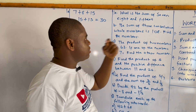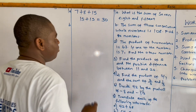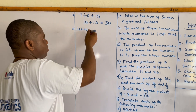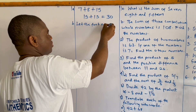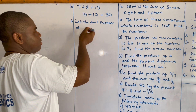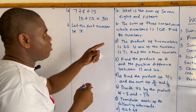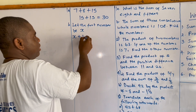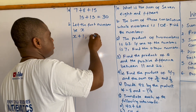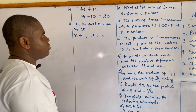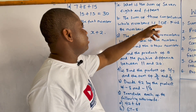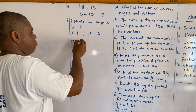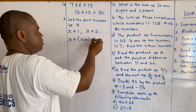For the second part, the sum of three consecutive whole numbers is one hundred and eight — find the numbers. Let the first number be x. Since there are three consecutive numbers, the second will be x plus one, and the third will be x plus two. The equation says the sum of three consecutive whole numbers is one hundred and eight, so we have x plus (x plus one) plus (x plus two) equals one hundred and eight.